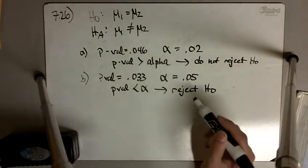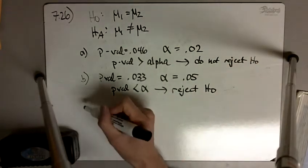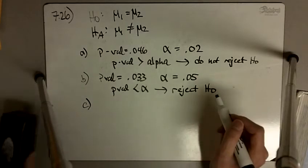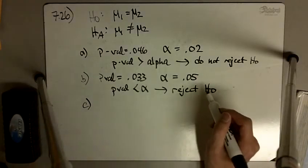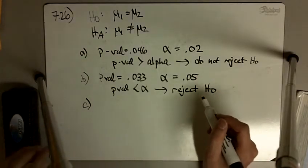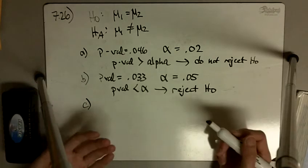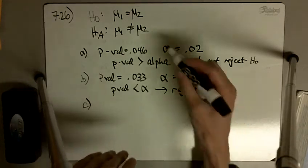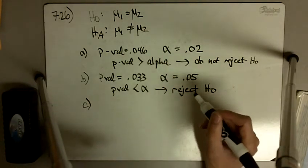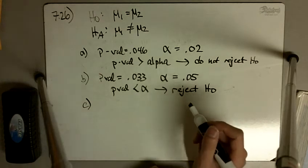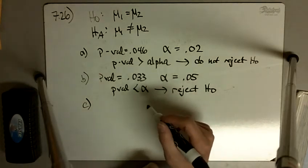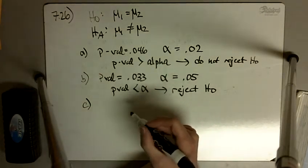Based on the significance level — the alpha level we've chosen — our alarm goes off. We're saying the two means are not equal, and therefore we reject the null and say that they're different.